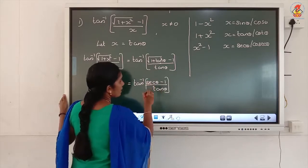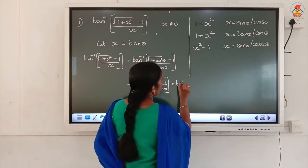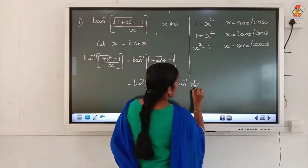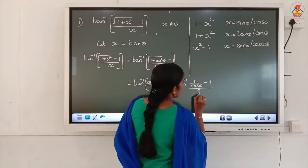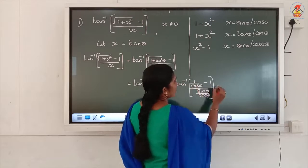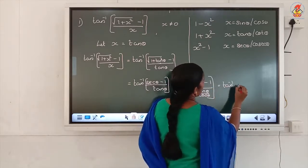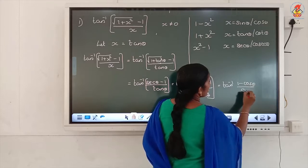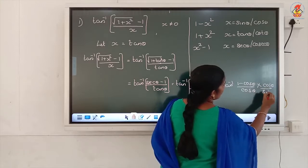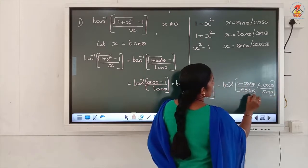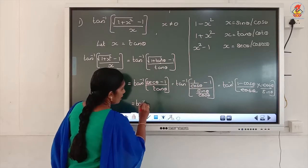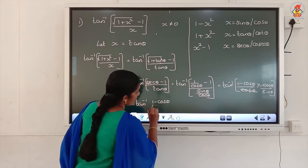We can simplify secθ minus 1 divided by tanθ. Since secθ is 1/cosθ and tanθ is sinθ/cosθ, we get tan inverse of (1/cosθ - 1) divided by (sinθ/cosθ). Taking the reciprocal and simplifying: tan inverse of (1 - cosθ)/cosθ multiplied by cosθ/sinθ, the cosθ terms cancel, giving tan inverse of (1 - cosθ)/sinθ.